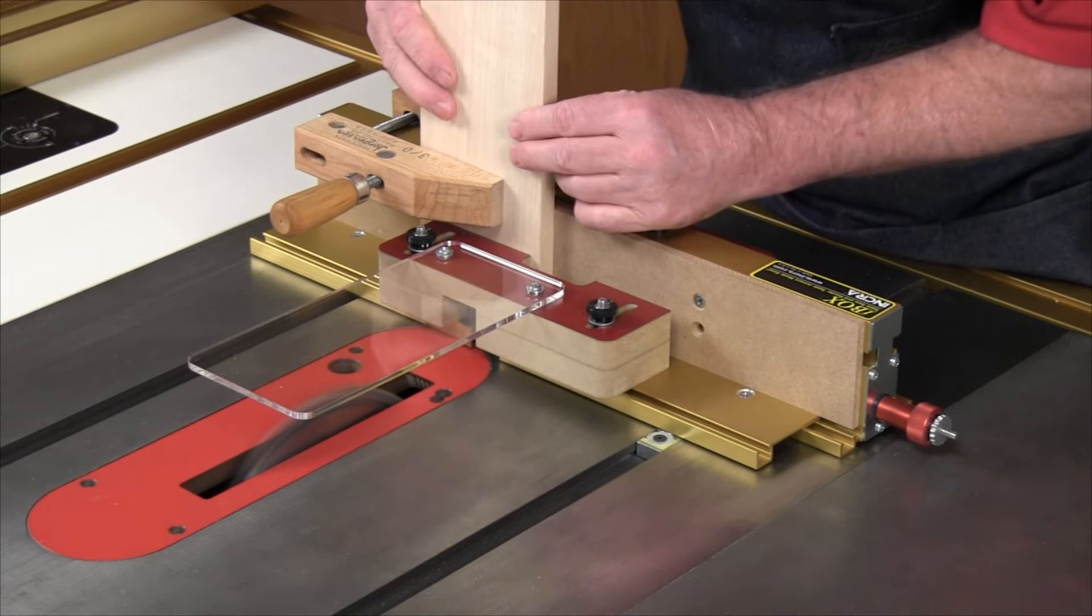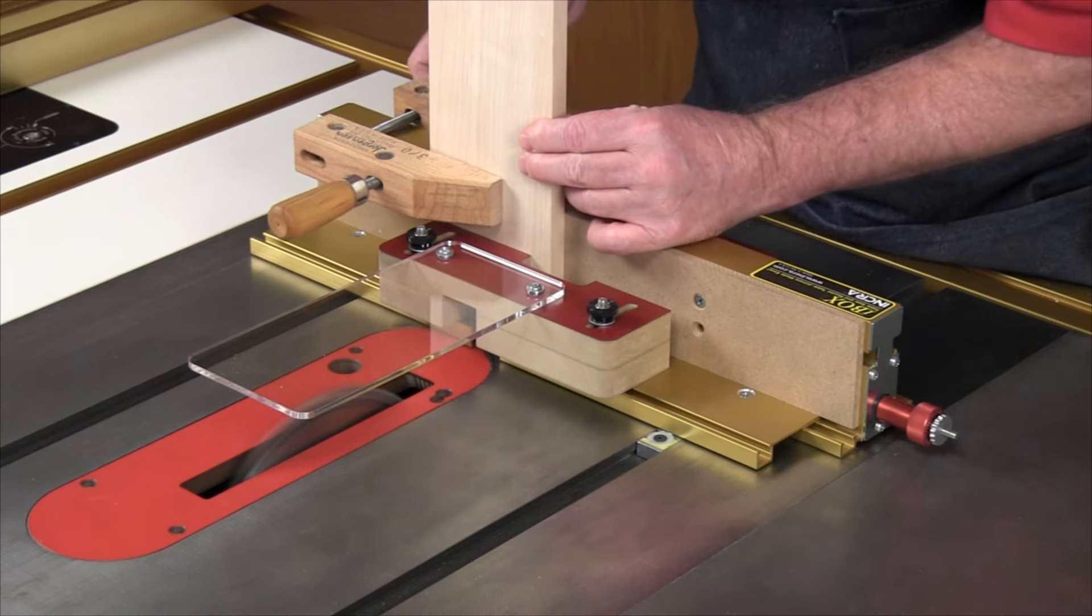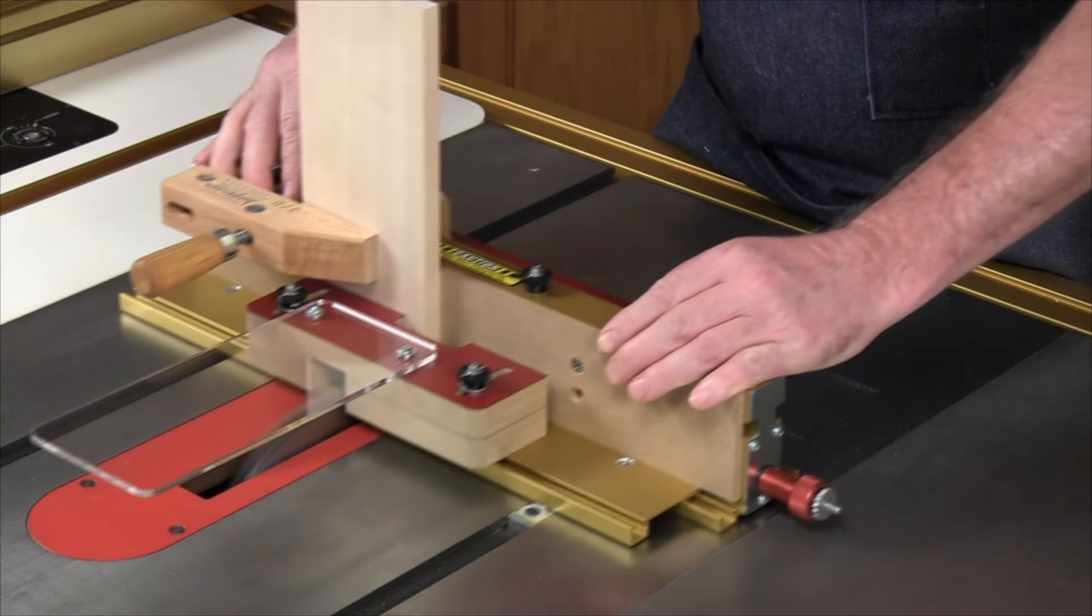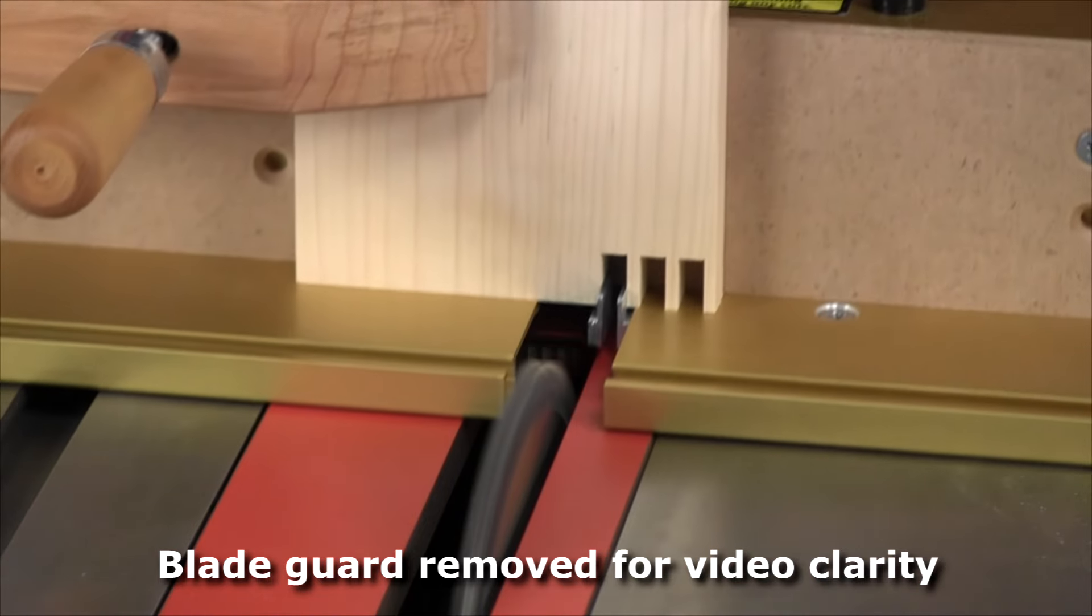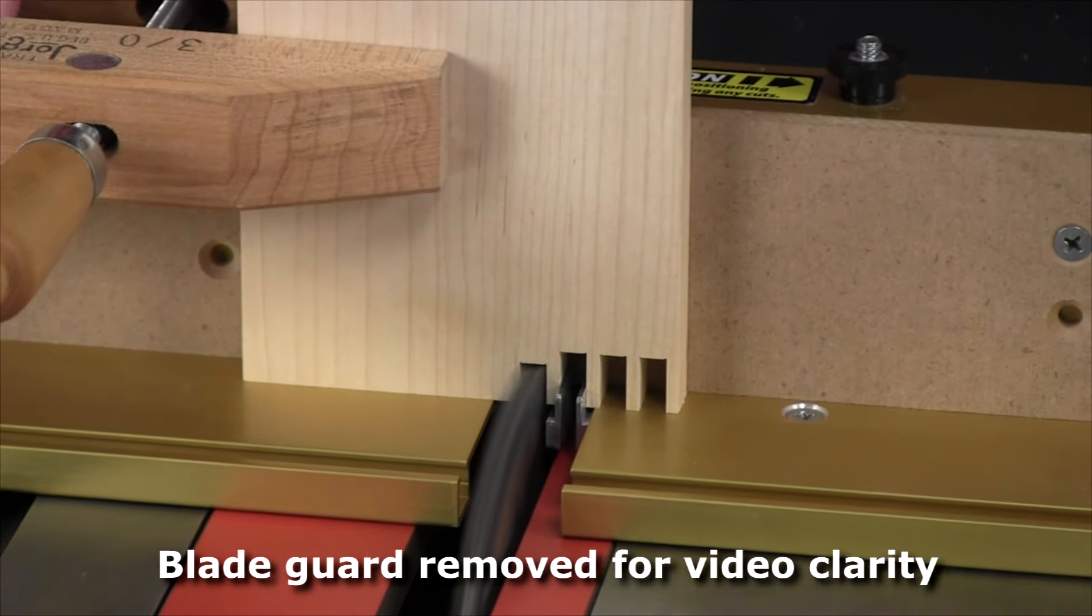The iBox is designed both as a carrier to hold and move your workpiece safely through the cut, and as a precision positioner to locate your work as you move from cut to cut across the width of the piece.